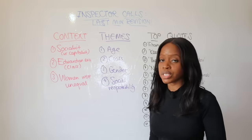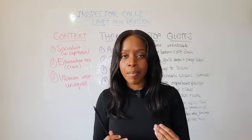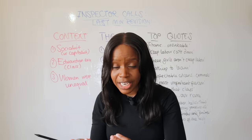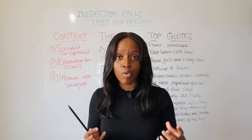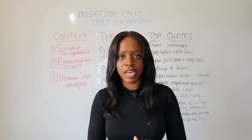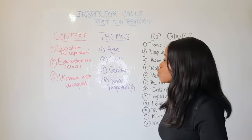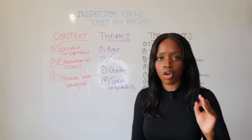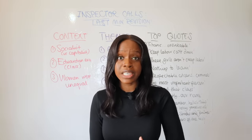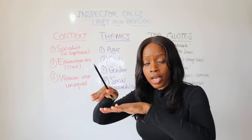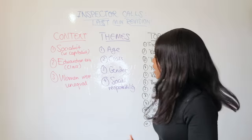The second theme is class. Priestley wanted to show the devastating impact of exploiting poor working-class women like Eva Smith, and more broadly working-class people like the John Smiths the Inspector refers to. This play is about how class divisions had devastating impacts on the working class and the poor. Priestley wants to level the class hierarchy and make things more equal.